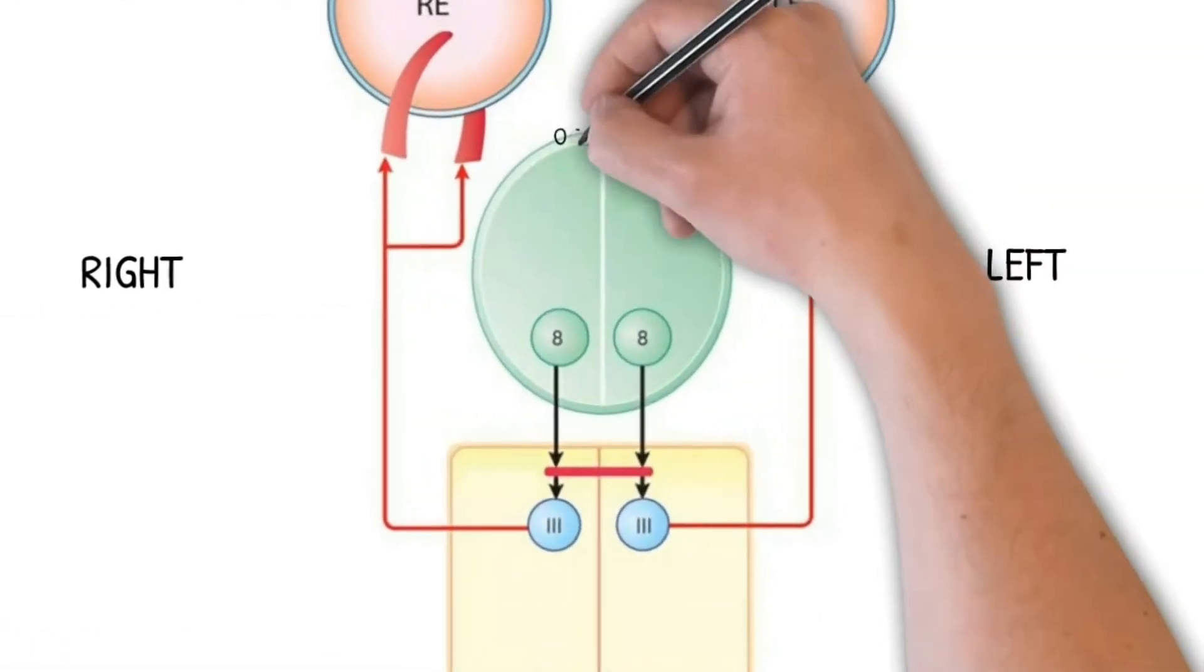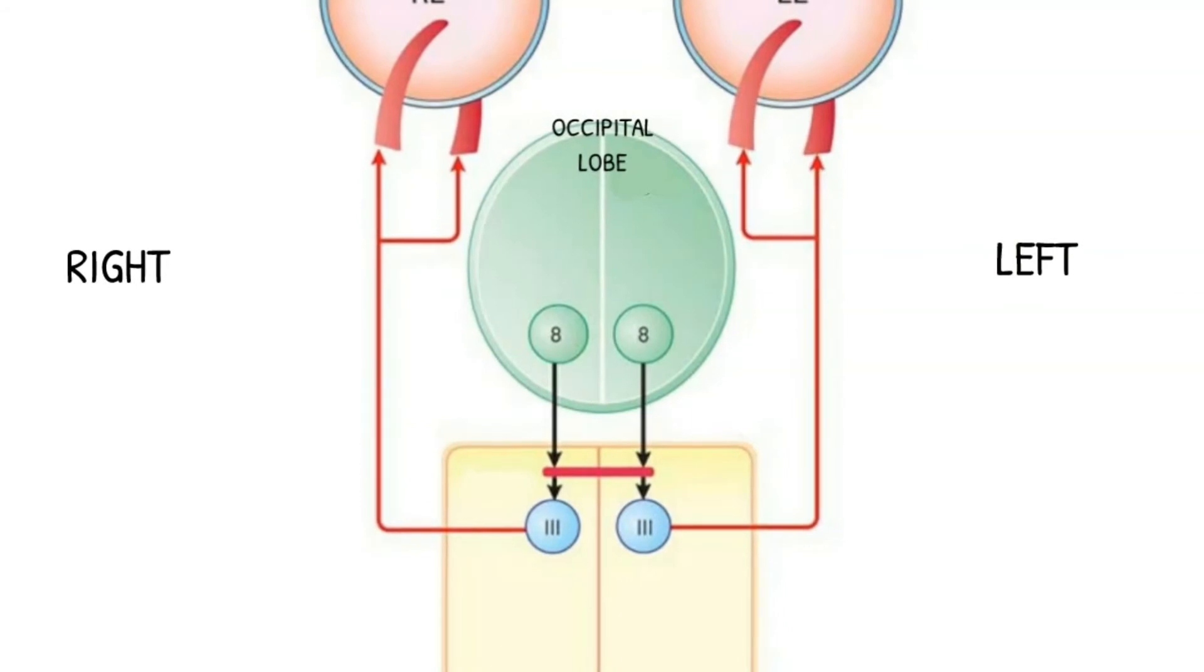Vertical saccadic depend on simultaneous bilateral activity within the frontal lobes in area 8. This means that horizontal saccadic are unilaterally controlled, whereas vertical saccadic are bilaterally controlled.